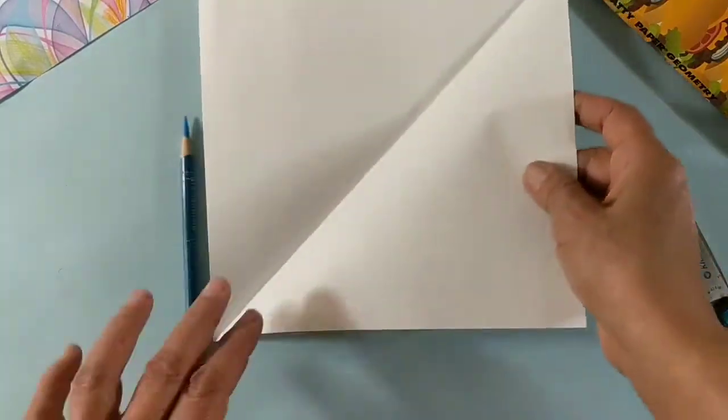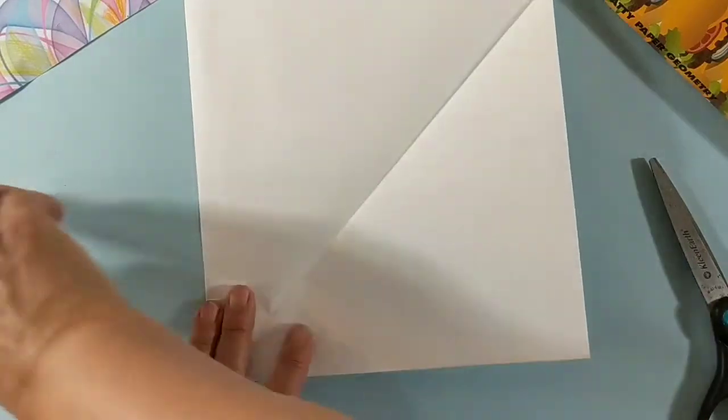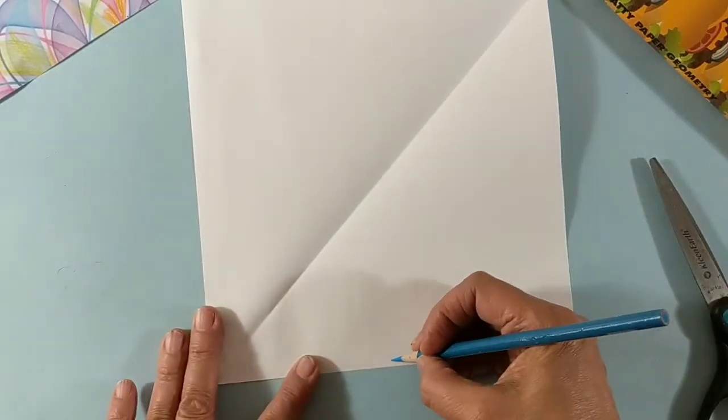What if you want a square that isn't this big, but it's this big?